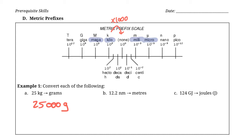Now let's try to go from 12.2 nanometers to meters. A nanometer is tiny — 1 nanometer is 10 to the negative 9 meters. So to convert, we go to the left three steps of a thousand: divide by a thousand, then divide by a thousand again, then divide by a thousand again. That's dividing by a billion total, or moving the decimal place nine times to the left. So we take 12.2 and move the decimal nine places.